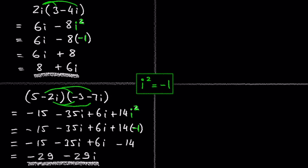I want you to try the next two examples on your own: 5i times 1 minus i, and 3 plus 4i times 7 minus 8i.